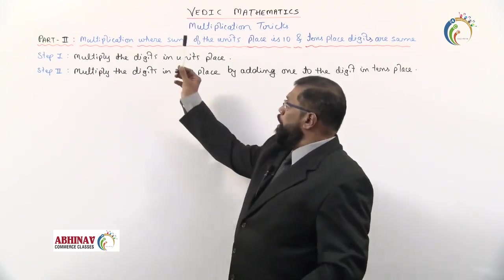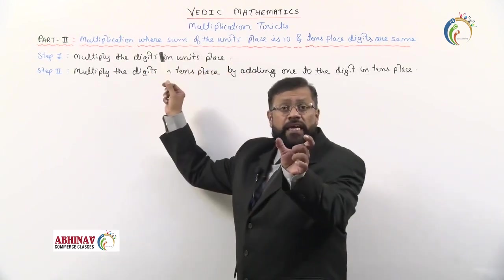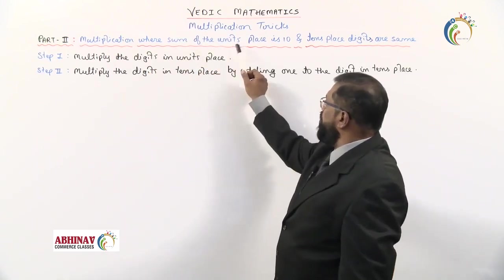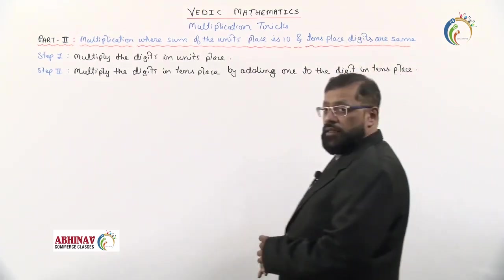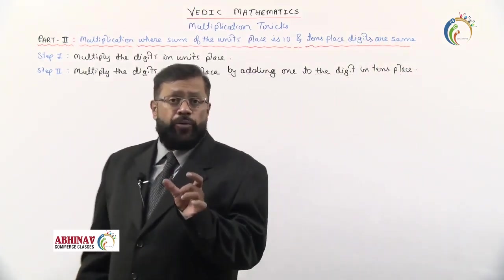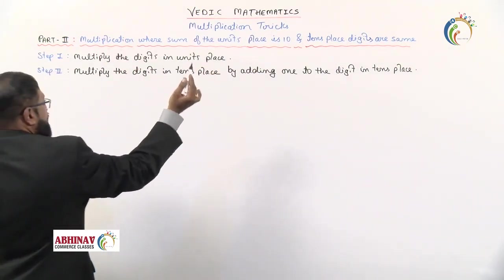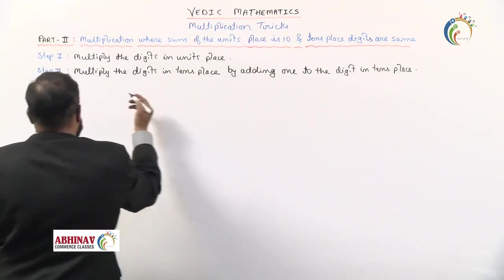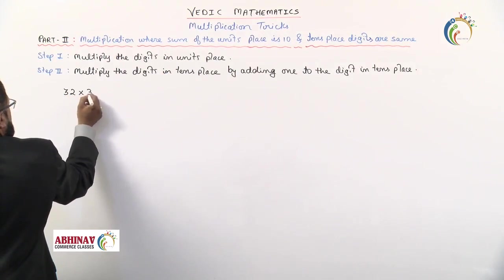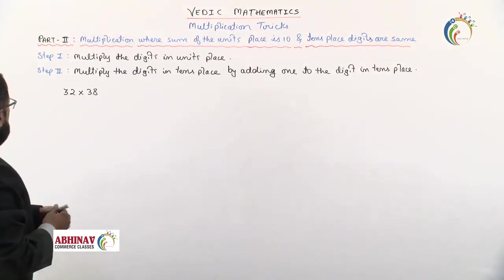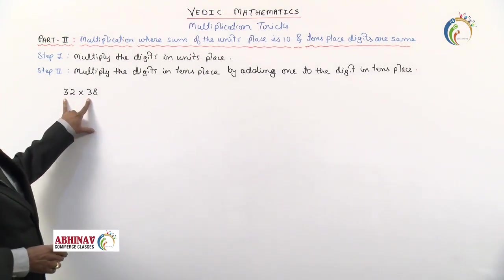In Part 2 we look at multiplication where the sum of the units place digits is 10 and the tens place digits are the same. For example, take 32 × 38: the units digits are 2 and 8, their sum is 10, and the tens digits are both 3.